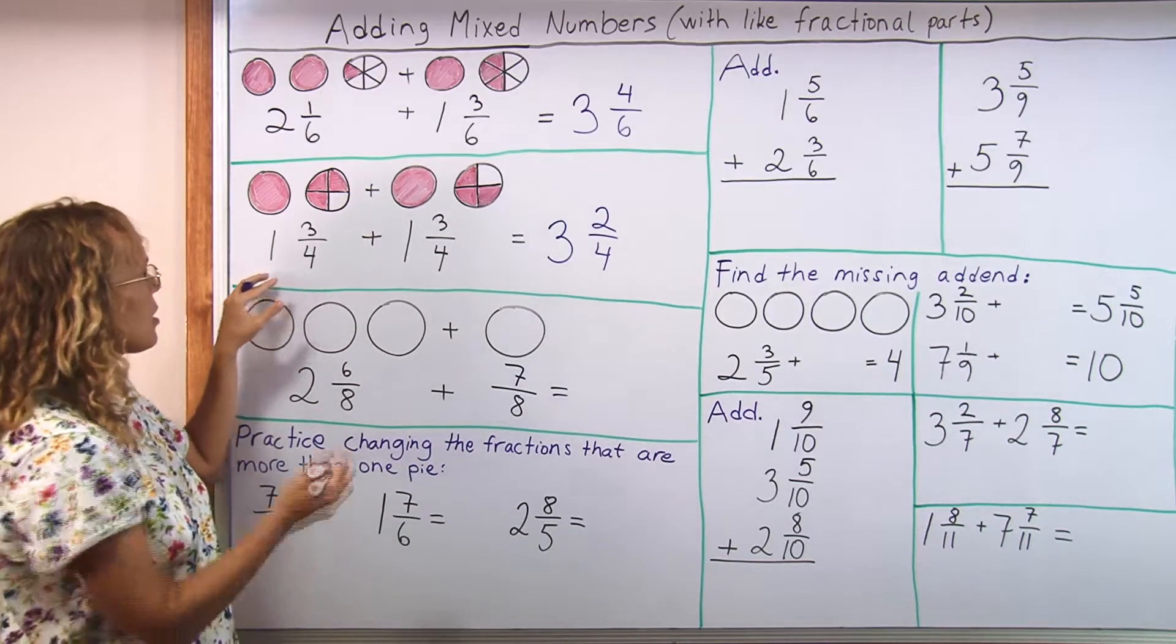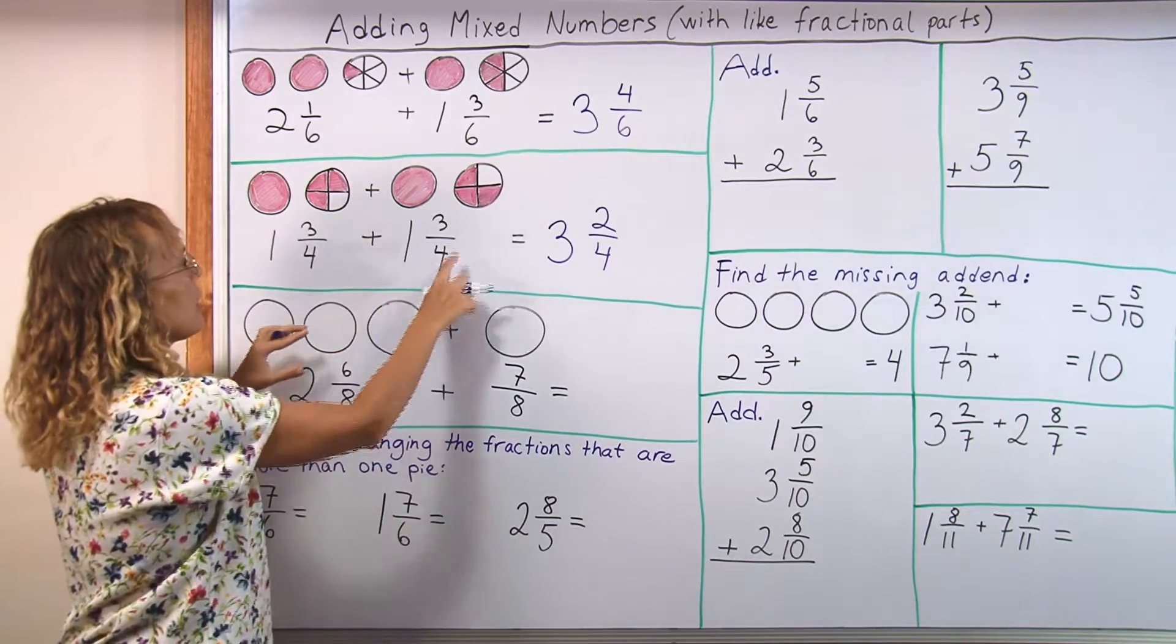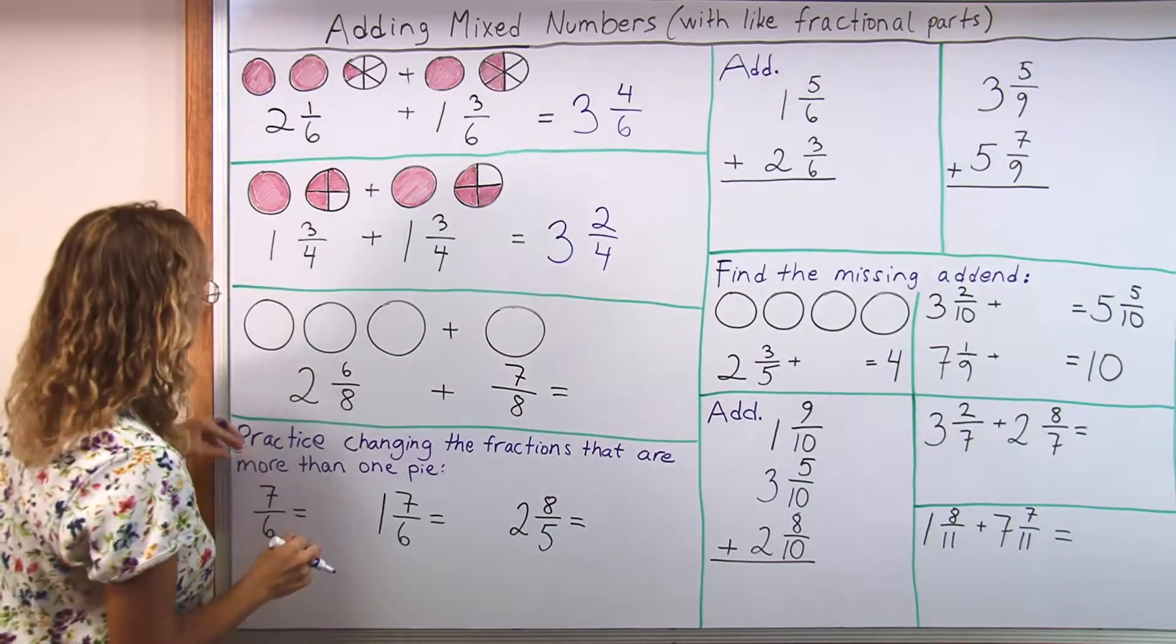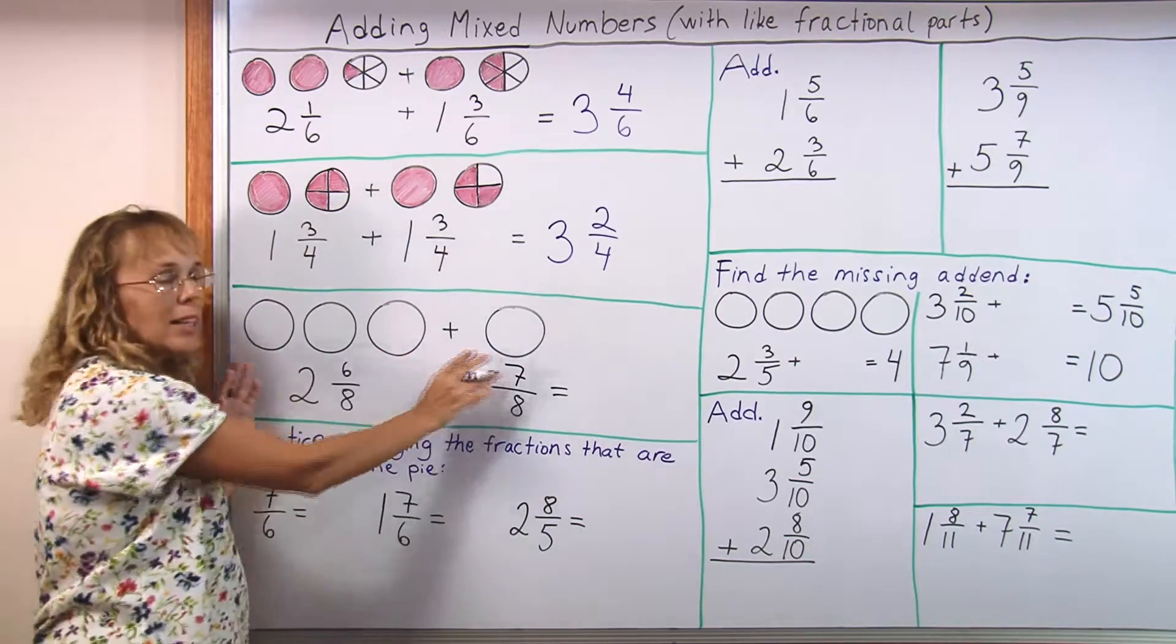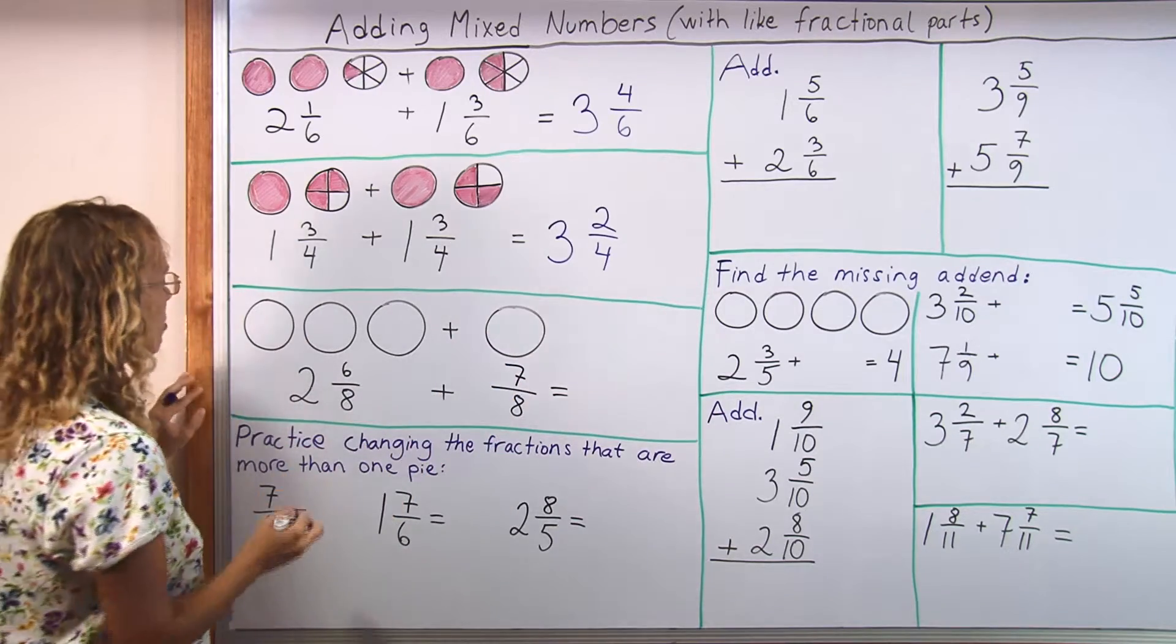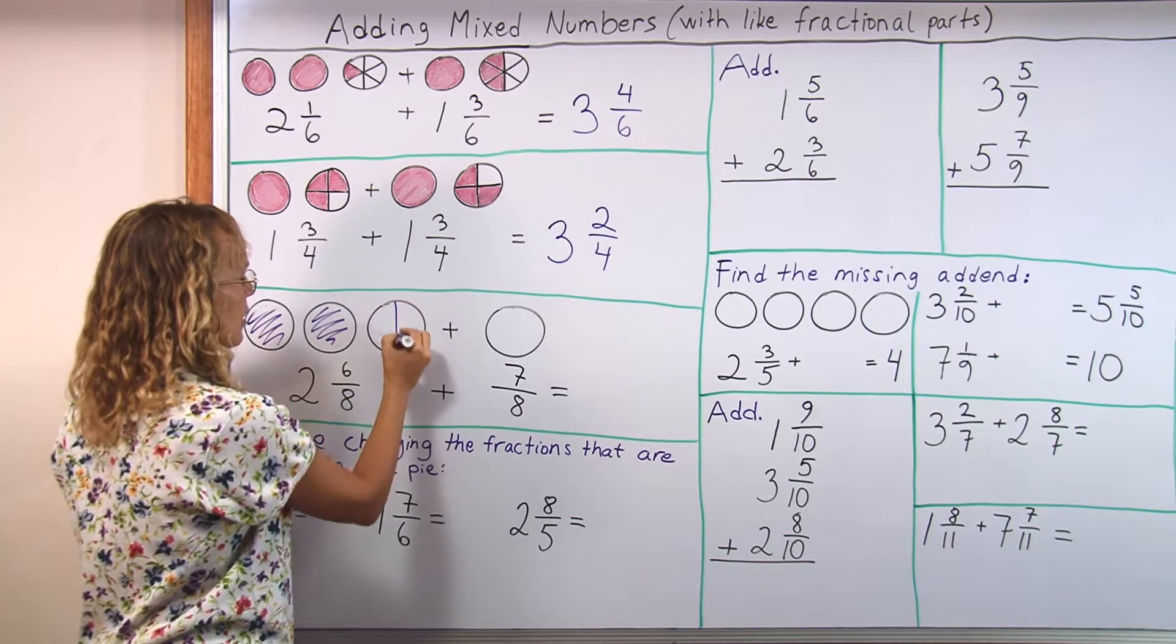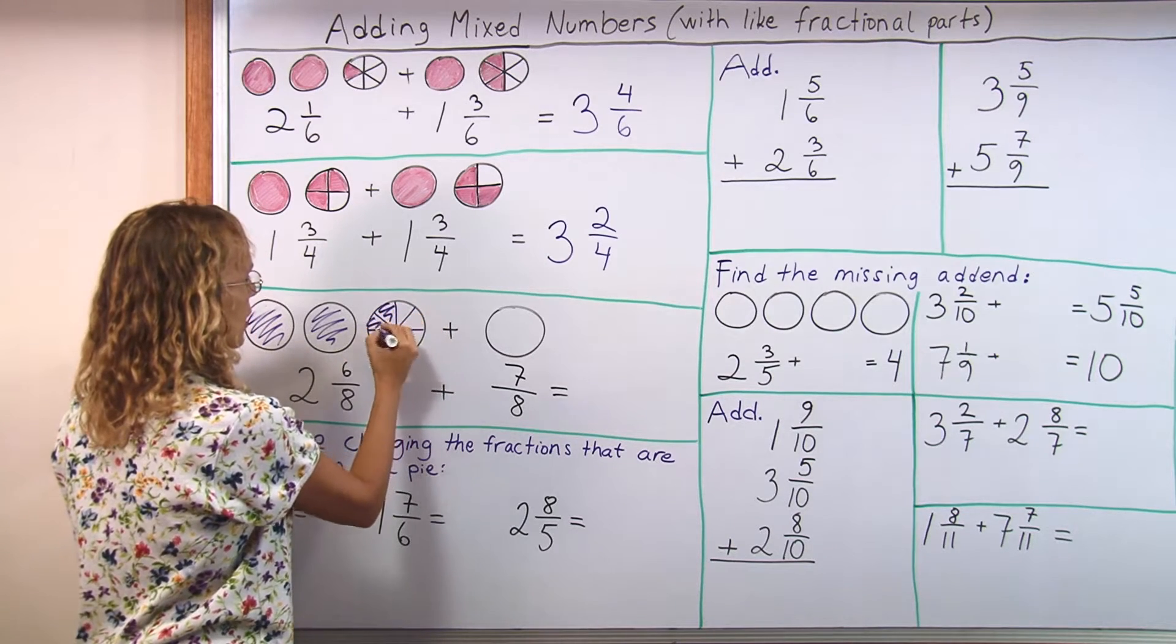You could add just the whole number parts and get 2, then add the fractional parts and get 6 fourths, and then change it to this. And that's what we will be practicing. Here is another problem where I have left the pies empty so that the student can draw and use the pies as a visual model to help. Like this, 2 whole pies, color these, then 6 eighths. This needs divided into eighths, which is easy, like that. Then color 6 here.